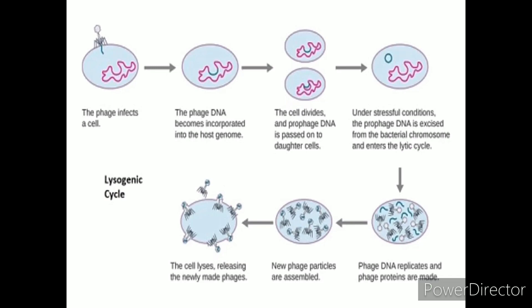Unlike the lytic cycle, the bacterial cellular mechanism is not hijacked by the viral particles and no biosynthesis of viral proteins takes place. The process of replication continues until there are some stressors, which can be either physical stressors like UV radiation or low nutrient conditions, or chemical stressors, which might result in the transition of the lysogenic cycle into the lytic cycle. Once converted into the lytic cycle, the viral DNA undergoes transcription to produce viral proteins, and the proteins and viral genome are assembled to form complete viral particles, which are then released from the host cell by lysis.